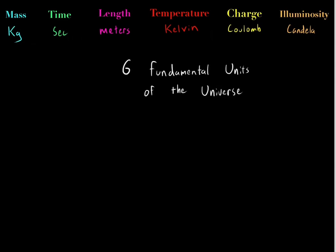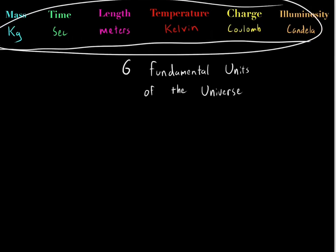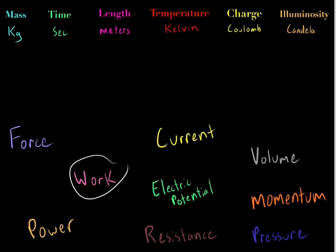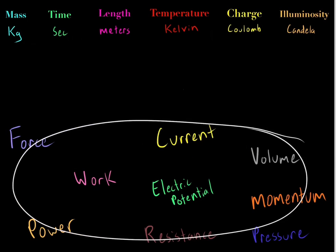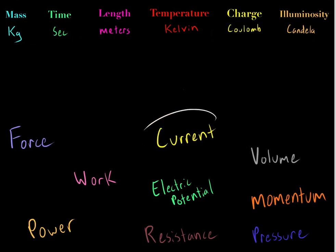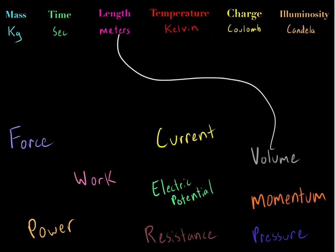Every variable in our known universe is made up of combinations of these six fundamental units. Whether it's force, work, current, or volume — every single variable is just a combination of these basic units. For example, force is made up of mass, time, and length. Current is made up of charge and time. Volume is just three units of length: height, width, and length.